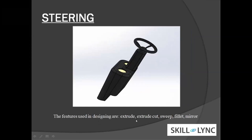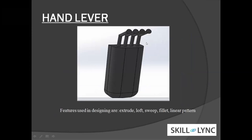This is the steering. The features used include extrude, extrude cut, sweep, fillet, and mirror. This is the hand lever, which is basically used to move the fork at the front of the forklift up and down, or to tilt the forks. The features used in designing it are extrude, loft, sweep, fillet, and linear pattern.